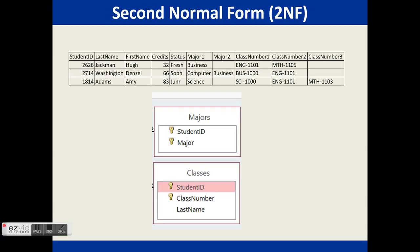For example, what if the classes table contained class number and last name? The primary key is class number and student ID. Last name is only dependent upon student ID — there is no relationship between last name and class number. So this is a violation of second normal form.